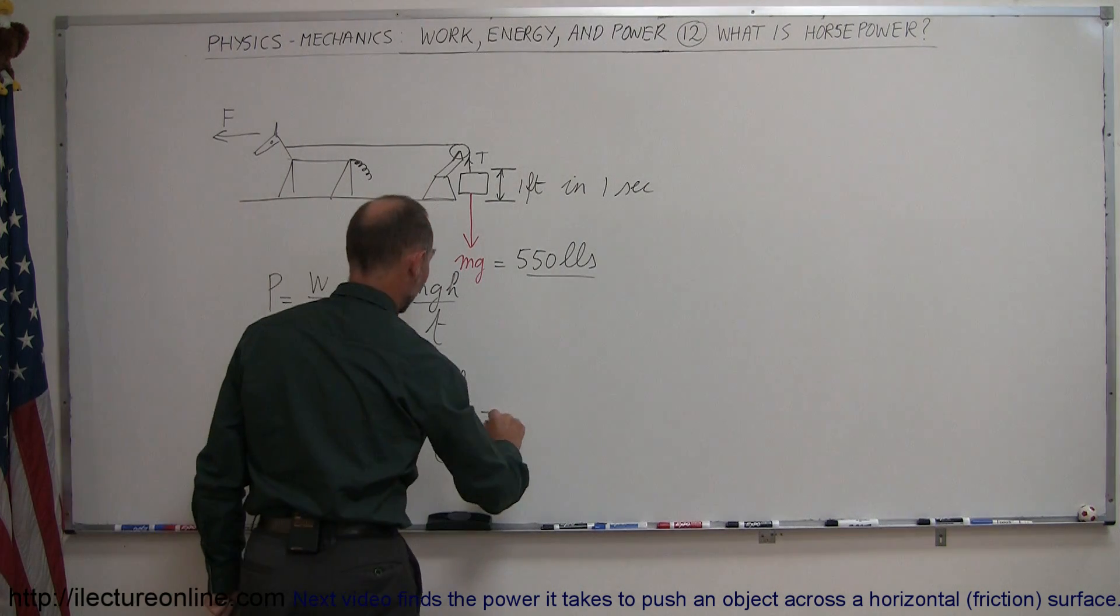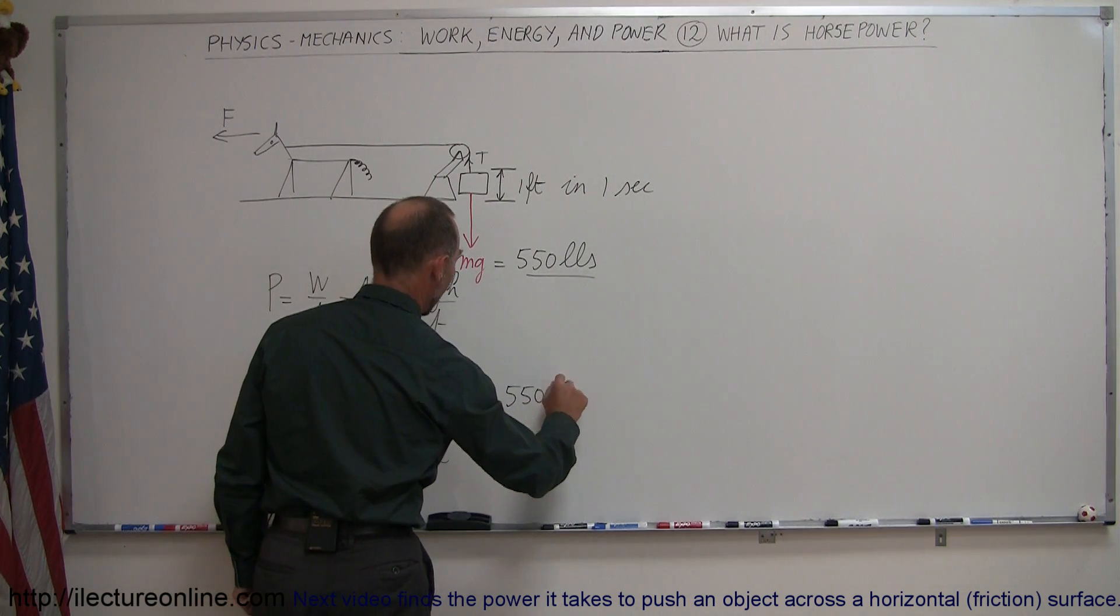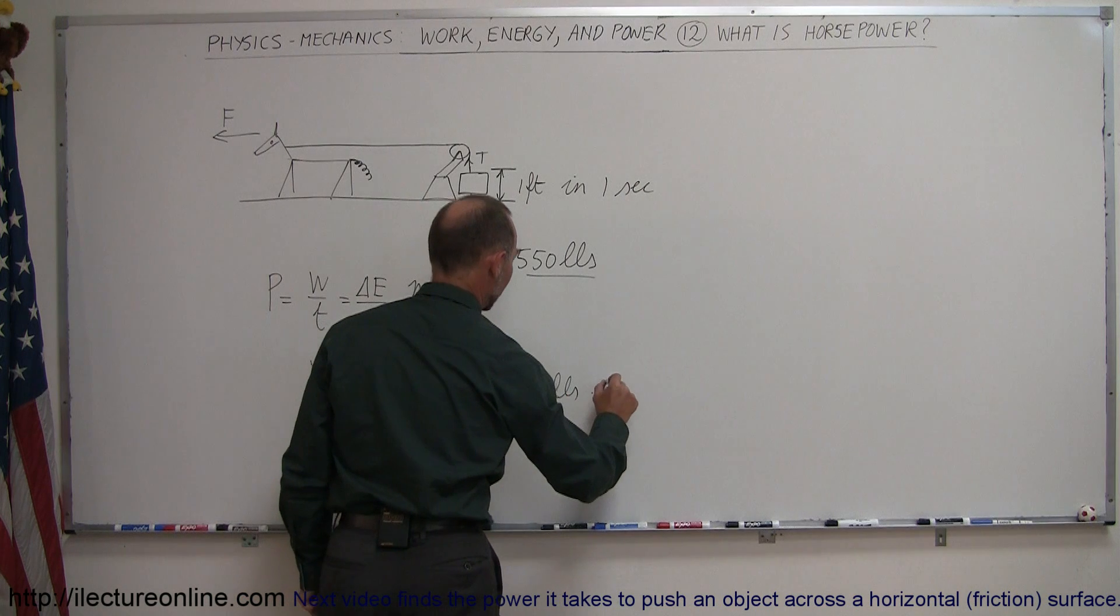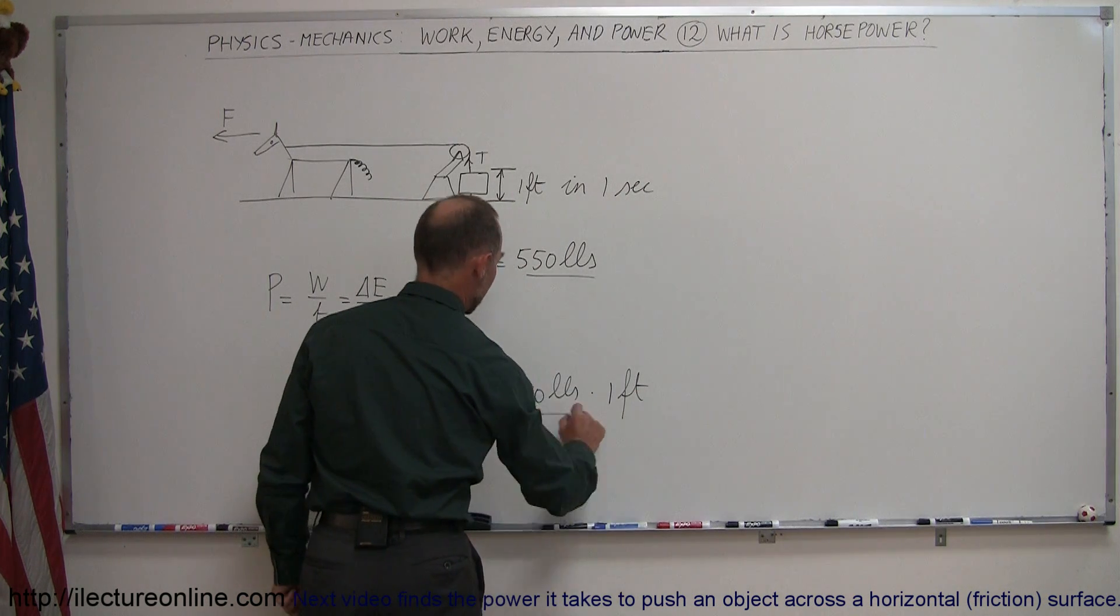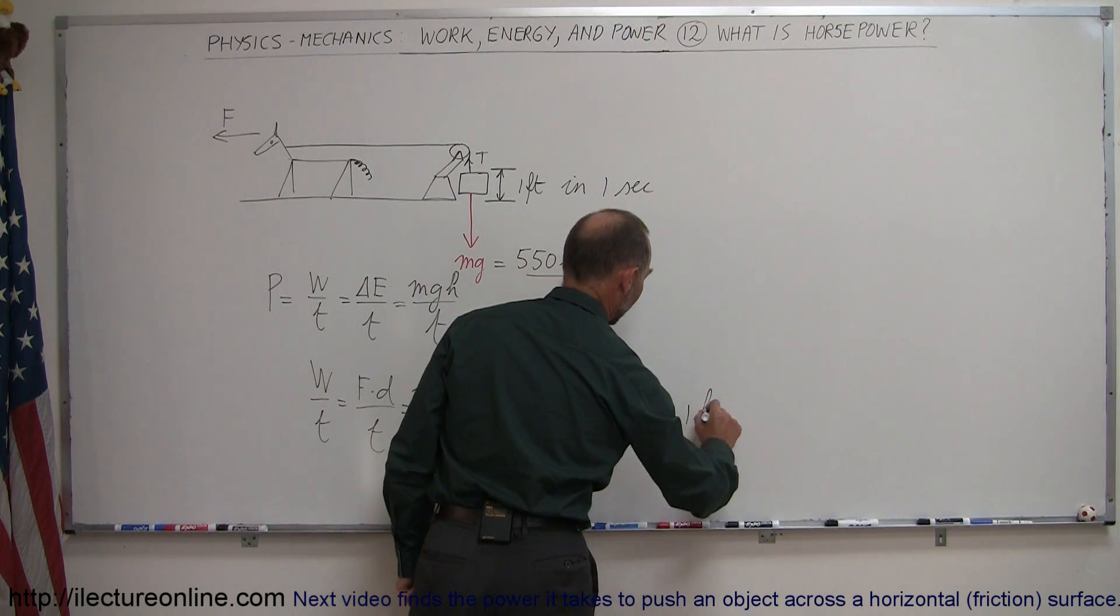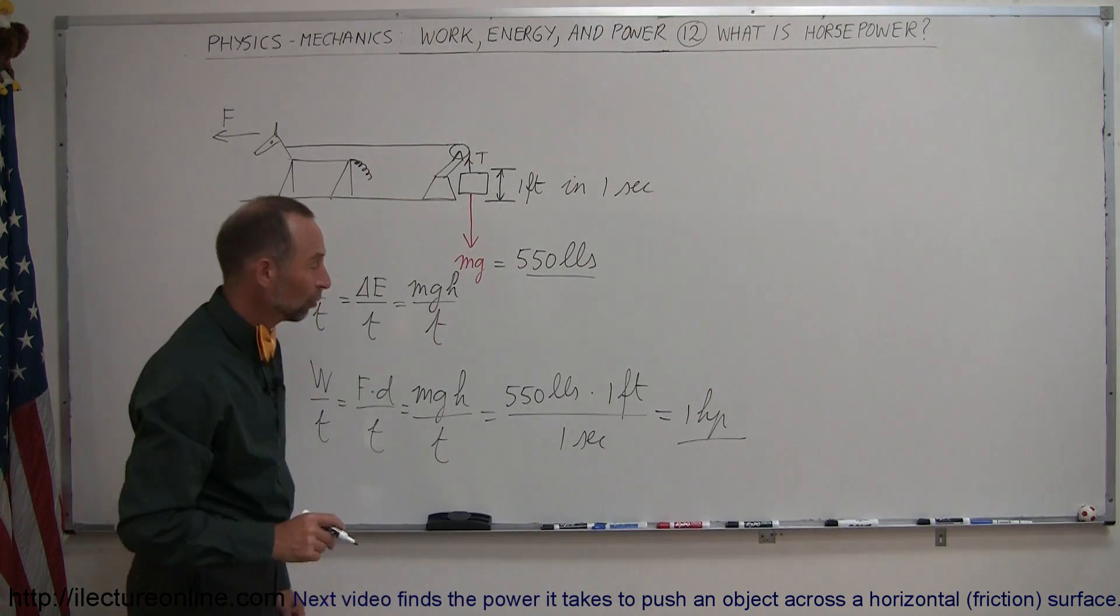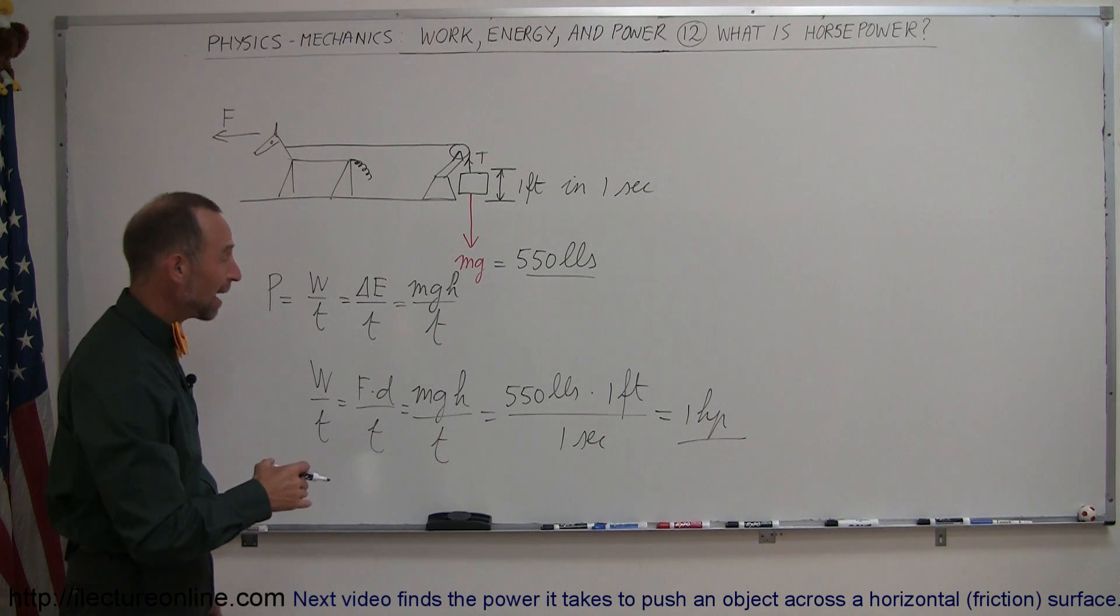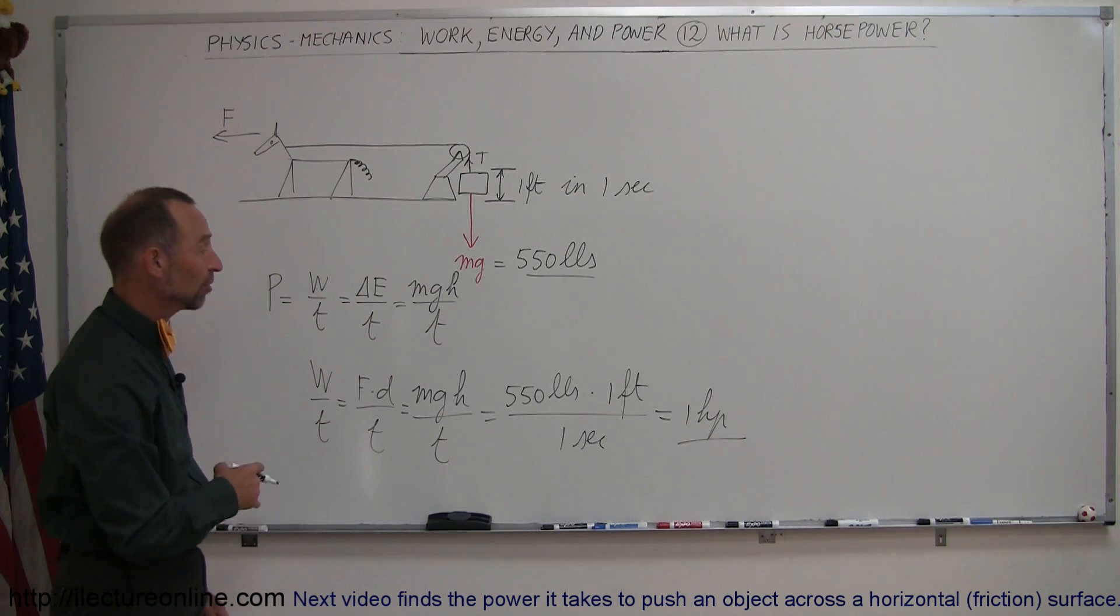And so when we plug in the numbers this was 550 pounds times one foot in one second, and that was then determined or defined to be one horsepower. So they call this 550 foot-pounds per second.